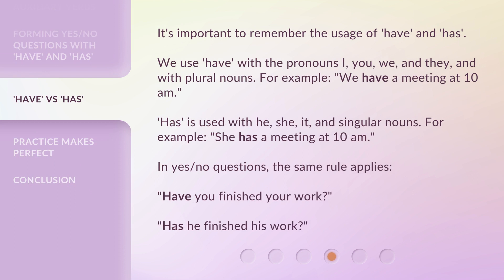We use 'have' with the pronouns I, you, we, and they, and with plural nouns. For example: 'We have a meeting at 10 a.m.' 'Has' is used with he, she, it, and singular nouns. For example: 'She has a meeting at 10 a.m.' In Yes/No Questions, the same rule applies: 'Have you finished your work?' and 'Has he finished his work?'